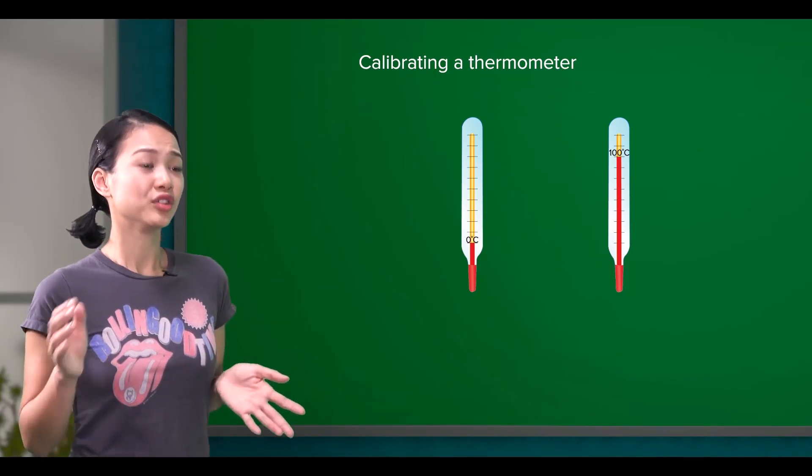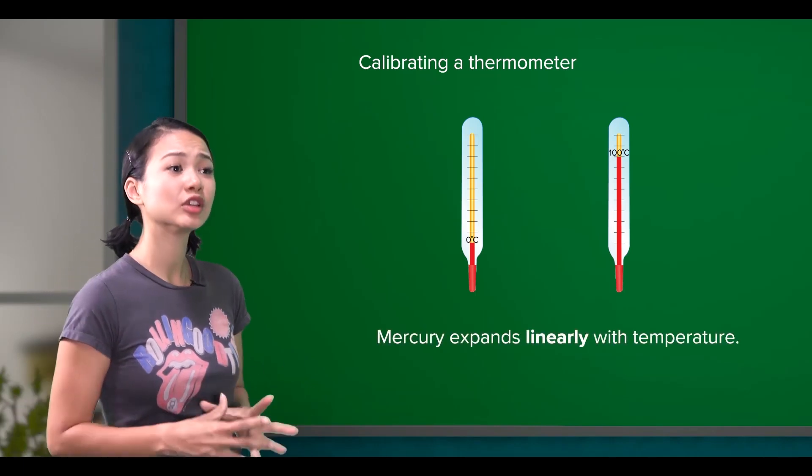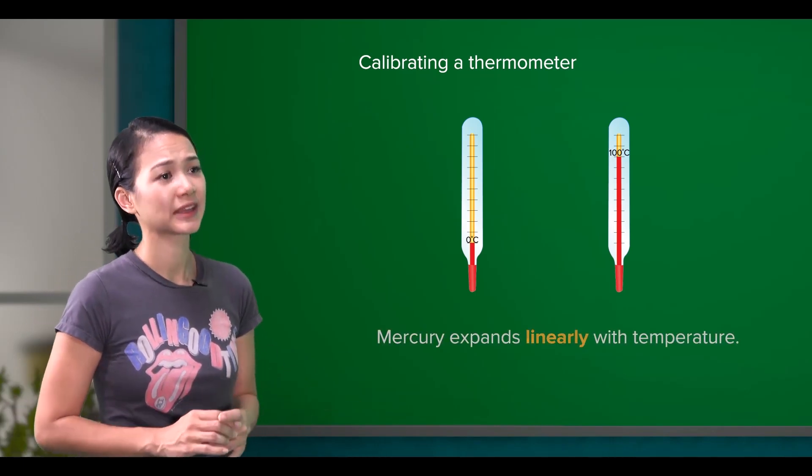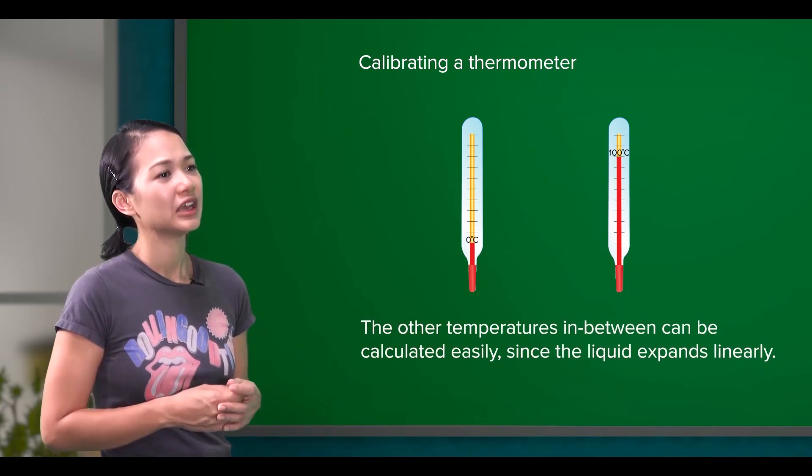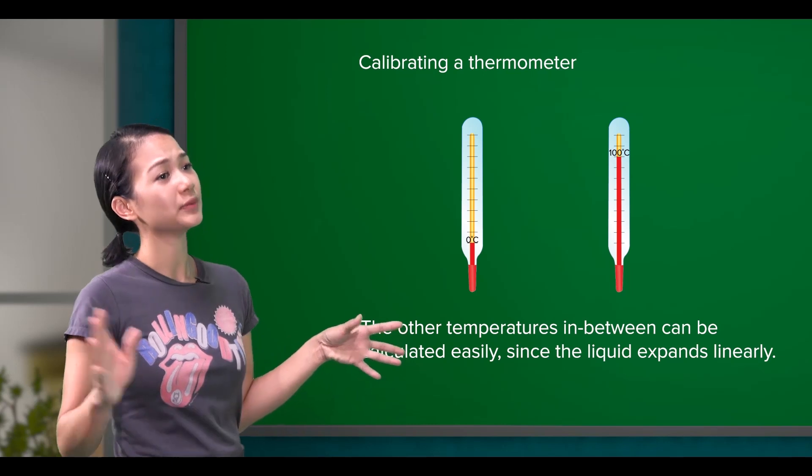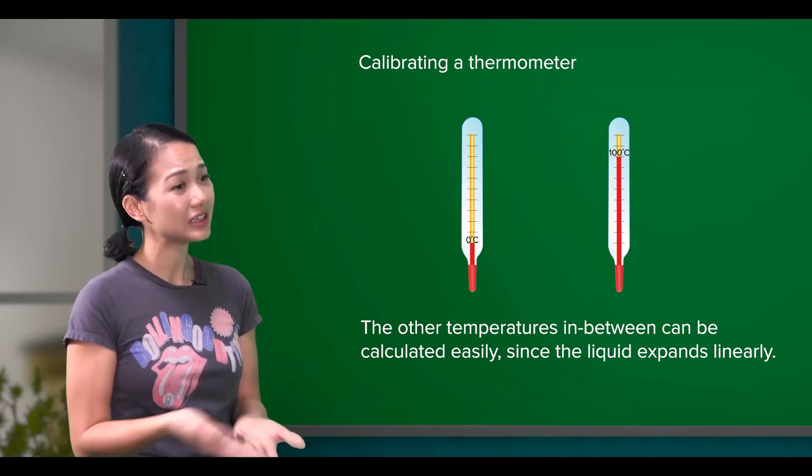I remember you said in the previous lesson that mercury expands linearly with temperature. Since we have the markings for 0 degrees and 100 degrees, then the other temperatures in between would be easy to calculate since the liquid expands linearly.